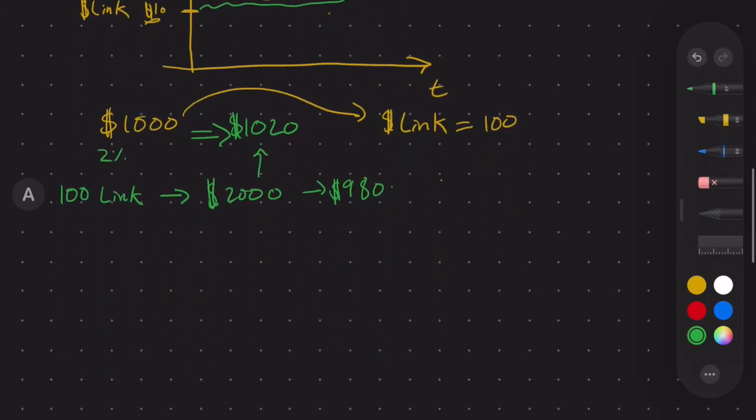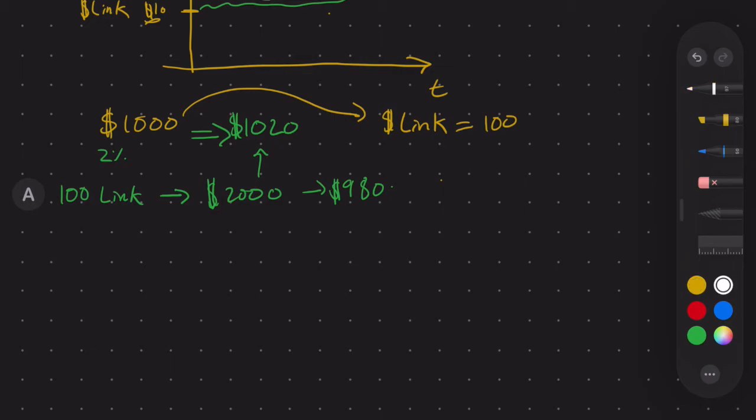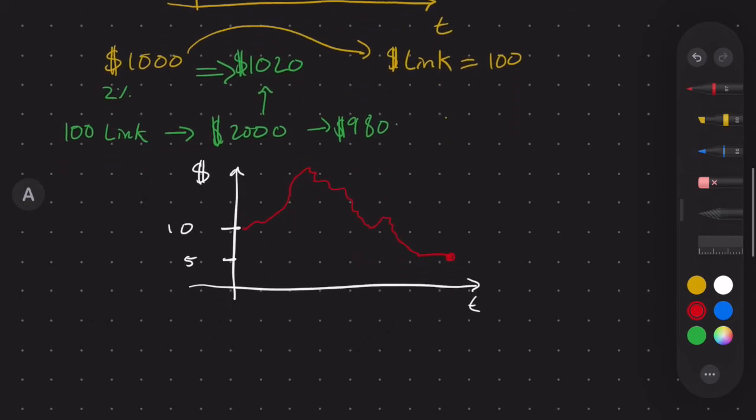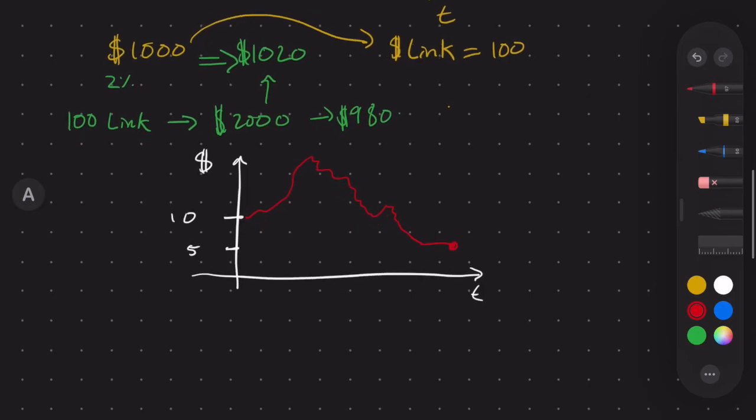Now, the other example would be a short position. So let's draw that out. Once again, same axes, right? This is time, this is the dollar price of Chainlink, and right now we're at $10. And I think that at the end of the year it's going to go to $5. So let's graph this out. Maybe it goes up over here to $20 first, then it comes down and goes up a little, and then at the end of the year it ends here at $5.